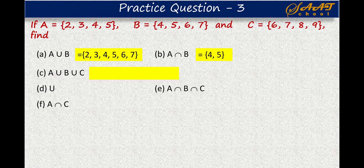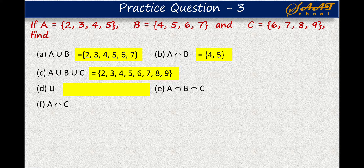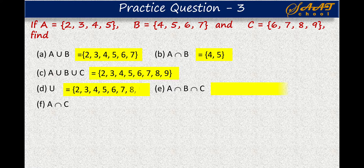Now the union of A, B, and C is the set that contains elements from all three sets — set A, B, and C. So A union B union C is {2, 3, 4, 5, 6, 7, 8, 9}. Next is the universal set. The universal set contains the elements from all those sets, and if there are some extra elements, then the universal set will contain those elements as well. In this case we have only set A, B, and C, so the universal set is accordingly defined. Next is the intersection of A, B, and C. To find the intersection of A, B, and C, we look at common elements among A, B, and C. Since there are no common elements among A, B, and C, the intersection is a null set.